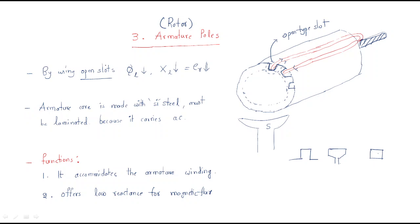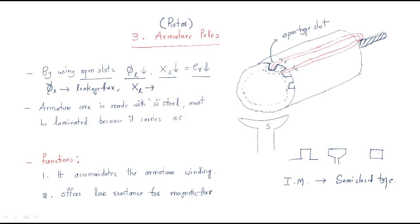Open slots are used in DC machines. In the case of induction machines, semi-closed type slots are preferred. In DC machines, open type slots are used because the leakage flux will be low and the leakage reactance will be low. The reactance voltage (ER) will also be less. Here, φL is the leakage flux, XL is the leakage inductance, and ER is the reactance voltage.